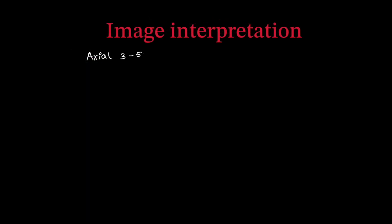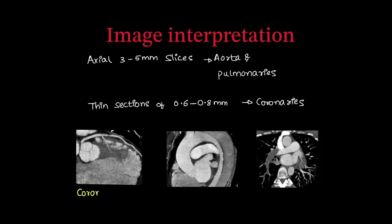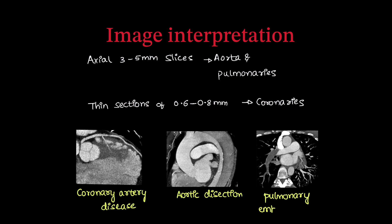For image interpretation, axial 3–5 mm slices are used to visualize the aorta and pulmonary arteries, while thin sections of 0.6–0.8 mm are used for viewing the coronaries. Findings include coronary stenosis indicating coronary artery disease, aortic dissection with thrombus, and pulmonary embolism — all reported as with standard scans.